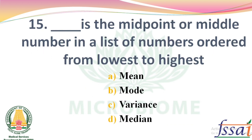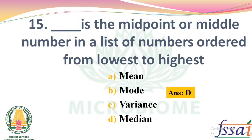Dash is the midpoint or middle number in a list of numbers ordered from lowest to highest. Options: Mean, Mode, Variance, Median. The right answer: Option D, Median.